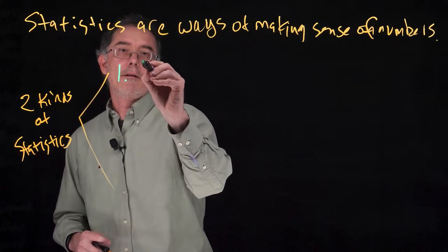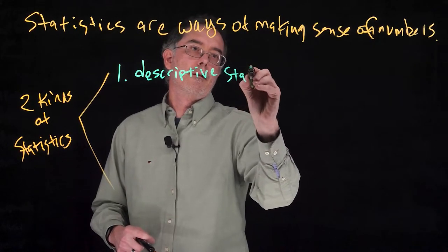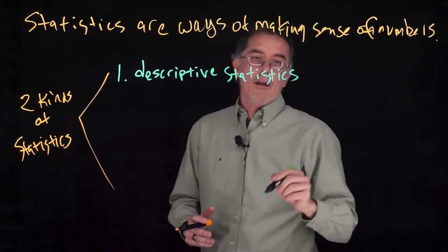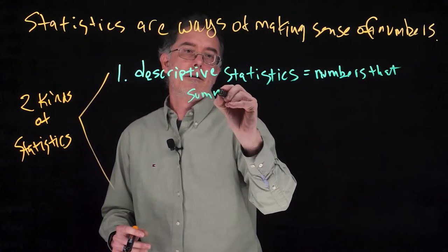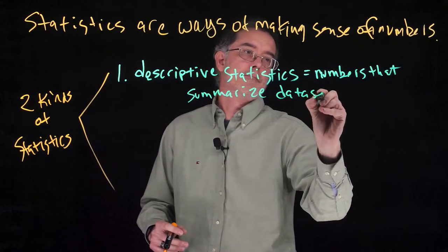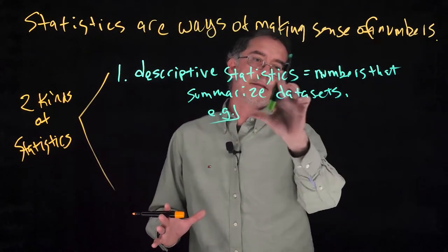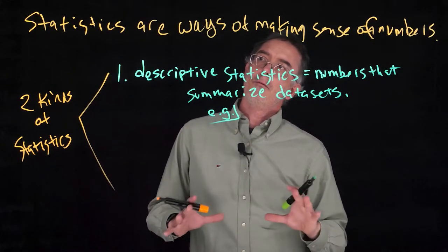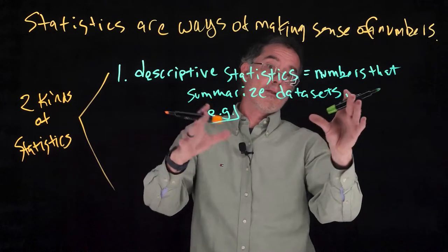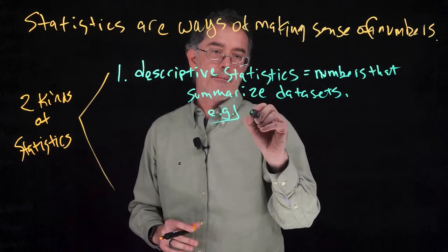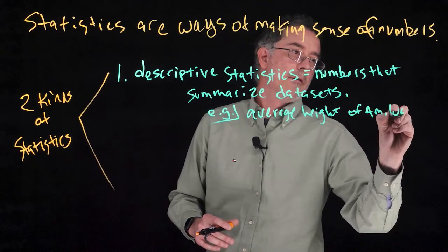One kind is called descriptive statistics. These are numbers that summarize data sets. For example, if you have the heights of all American adult women and you calculated the average, that would be a descriptive statistic that summarizes the average height of that data set.